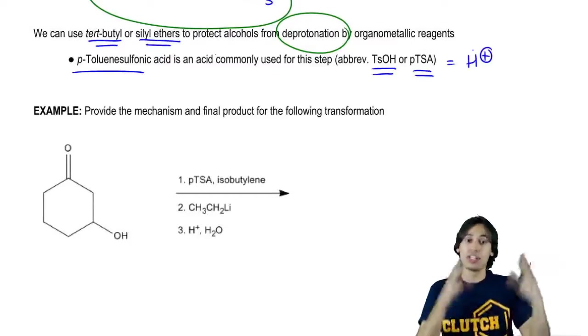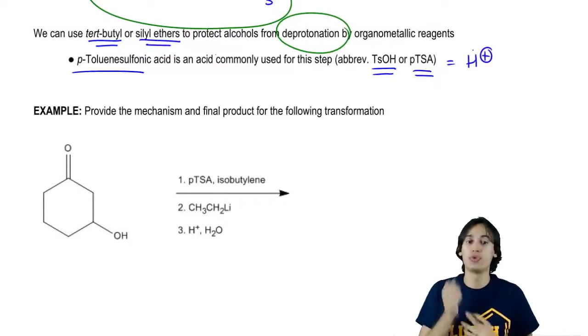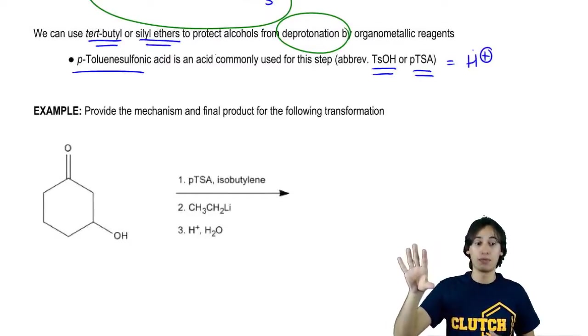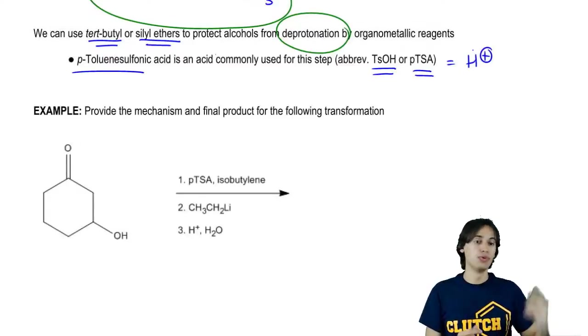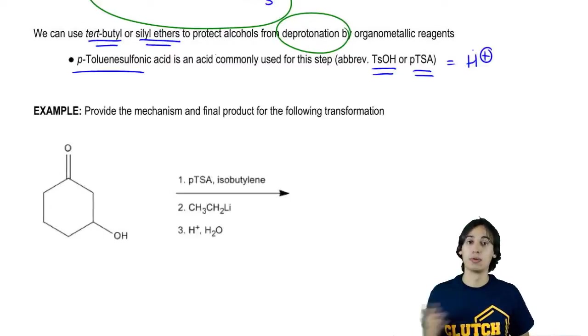An acid is used in protection. In a protection reaction, we always use one of these - we make an ether through the reaction of an acid like H+ and a double bond.